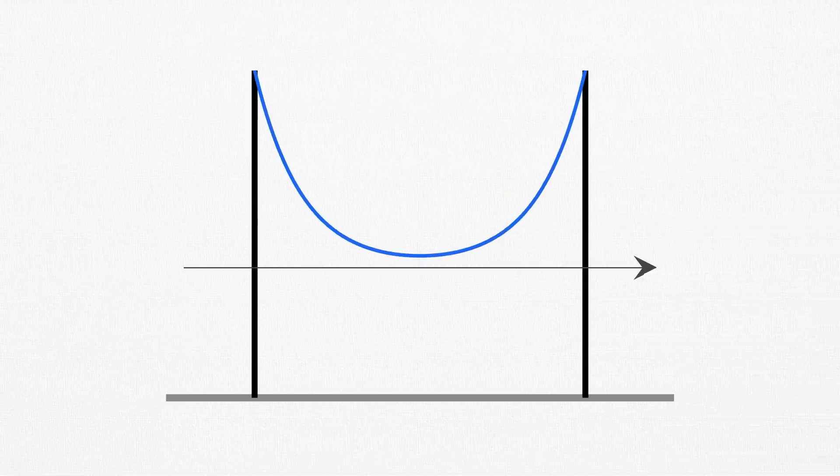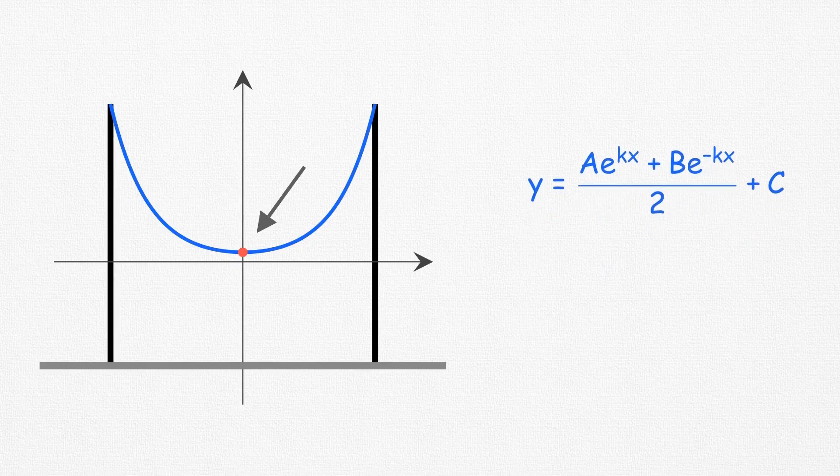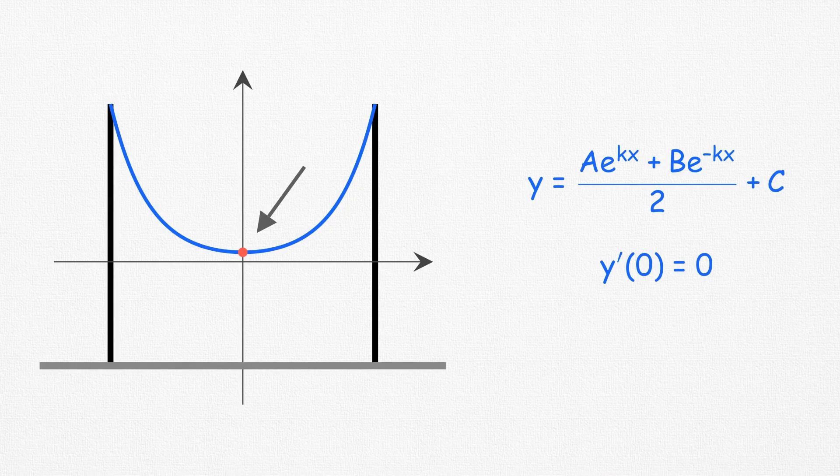Next, we apply a boundary condition. At the lowest point of the catenary, the slope is zero, meaning y'(0) equals zero. Substituting this into our equation, we find that a equals b.